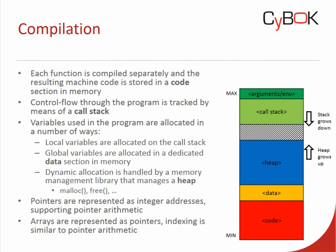Finally, to understand attacks, we need to know how pointers and arrays are represented at runtime in C. Pointers are just represented as integer addresses into the memory space — a pointer is simply an integer address of a cell in memory. By using that representation, pointer arithmetic becomes very simple: it's just integer addition. C also represents arrays as pointers to the first element, so indexing into an array is also just integer addition, similar to pointer arithmetic. That is what we need to understand about the compilation and execution of C programs in order to understand attacks.